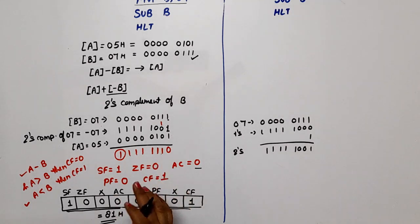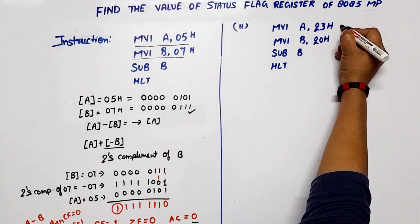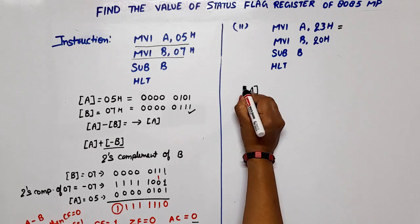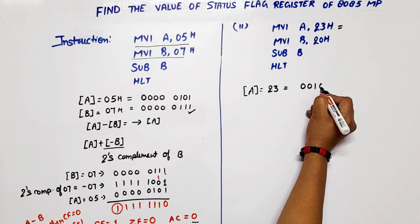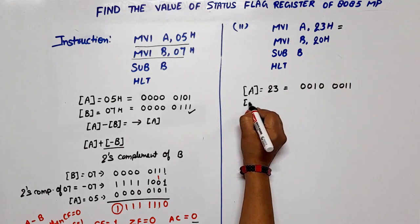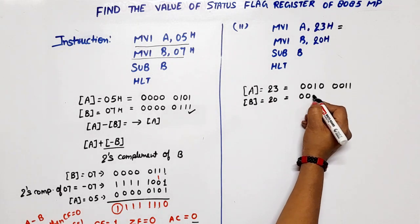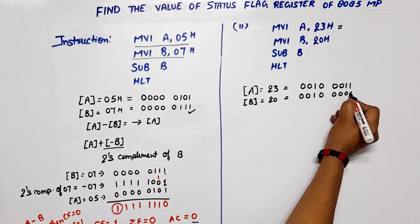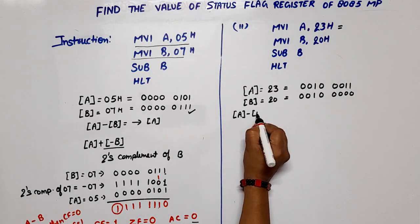Now one more example — in this case A's value will be greater than B. After execution of the first instruction, the content of A is 23H. In binary: 00100011. After the next instruction, the content of B is 20H. In binary: 00100000. We are performing A minus B — the result will be stored in the accumulator.